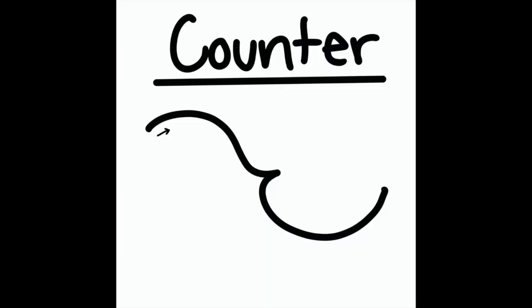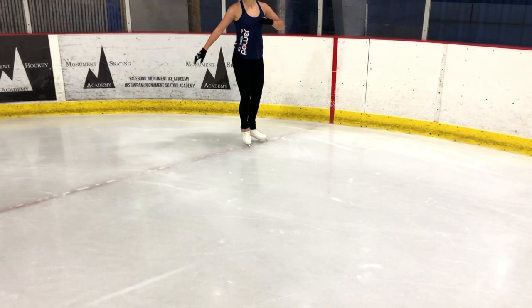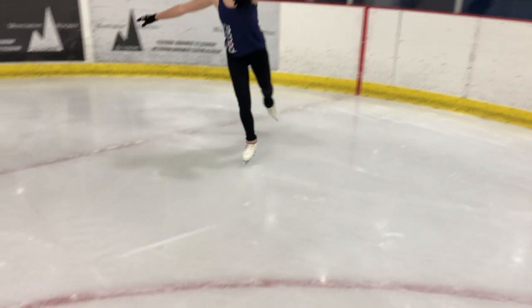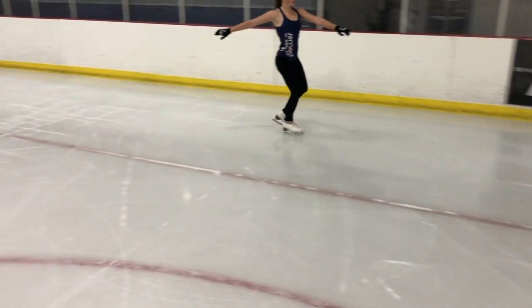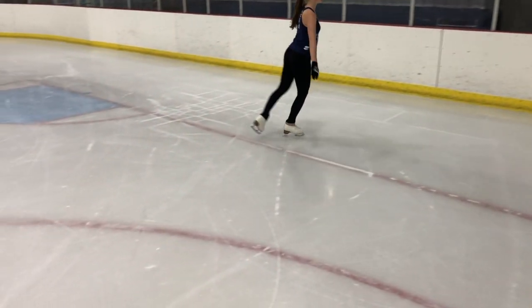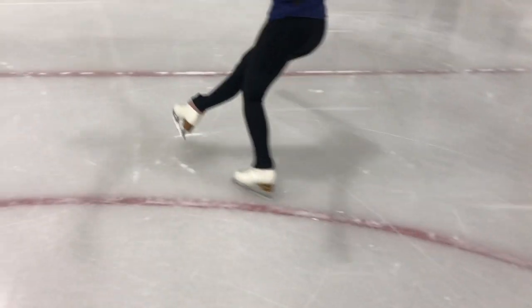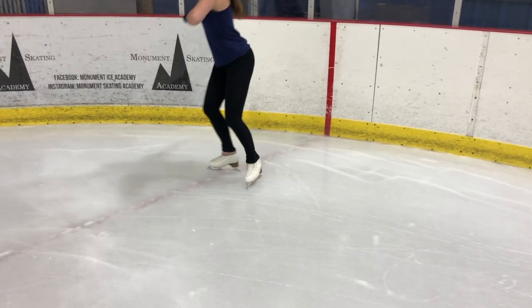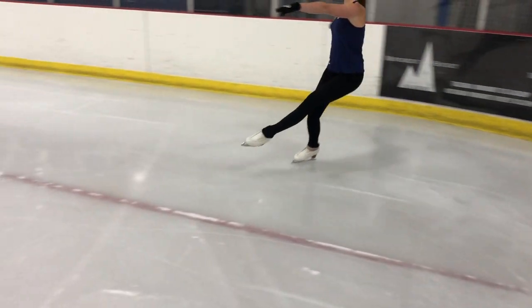Next is a counter. This turn changes circles. It goes into the turn like a bracket would, with the point facing out of the first lobe, and it goes out of the turn like a three turn would, with the point facing into the second lobe. As you can see, the turn is located on the axis, which is represented by this red line that I'm skating on, as well as the dotted red line in the drawing.